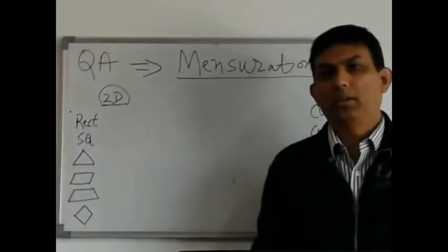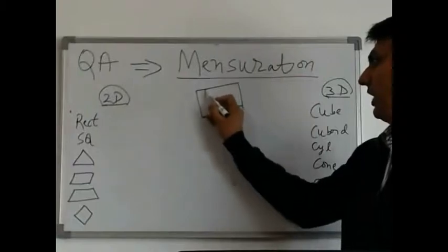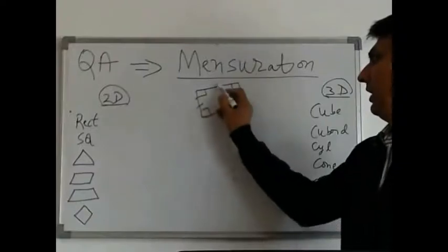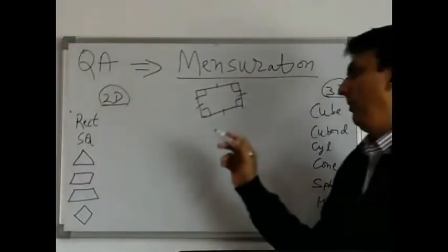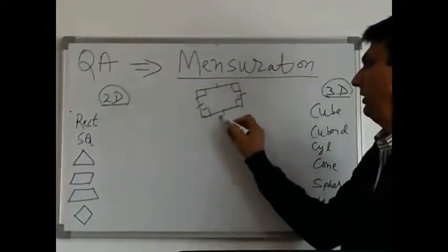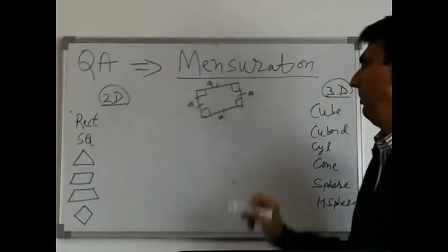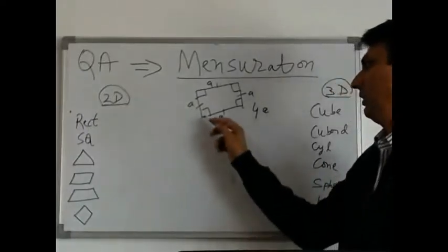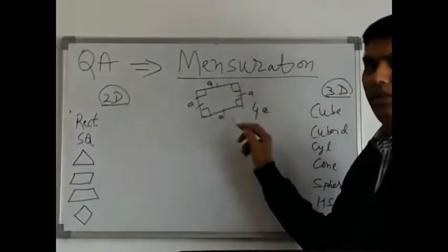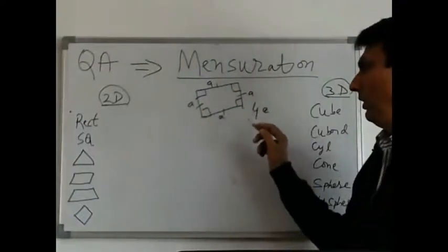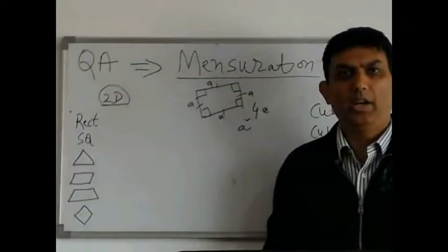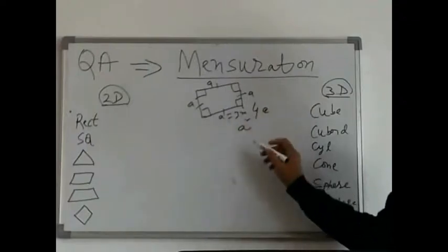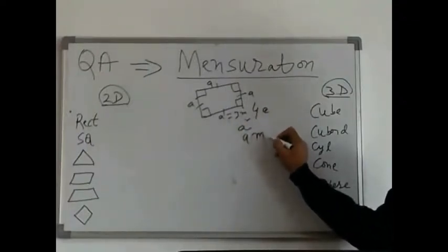Our next figure is a square. A square is a four-sided figure where all four sides are at right angles to each other and the length of all four sides is the same. Perimeter becomes 4A. Area is length into breadth, which is A into A, so area becomes A squared. If A equals 3 meters, then area of this square would be 9 square meters.